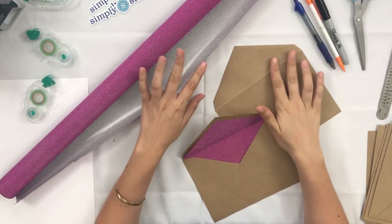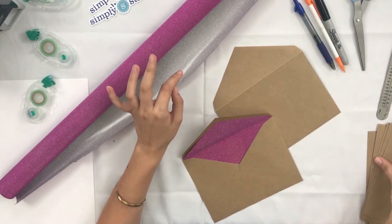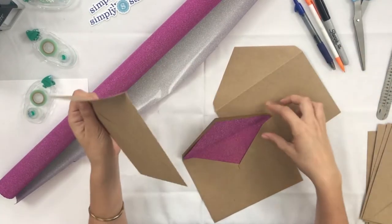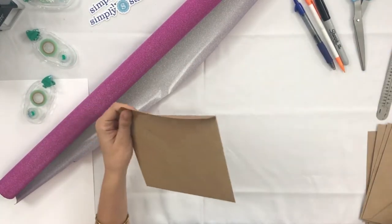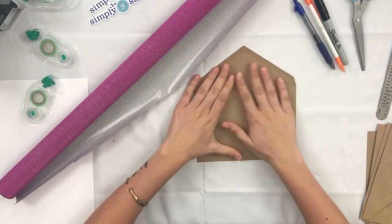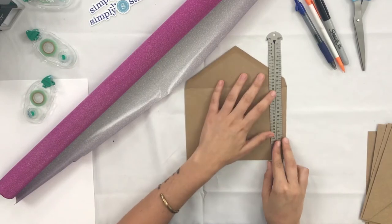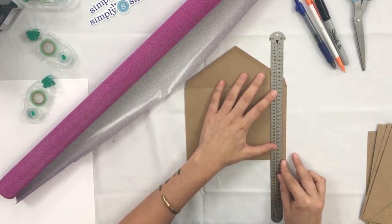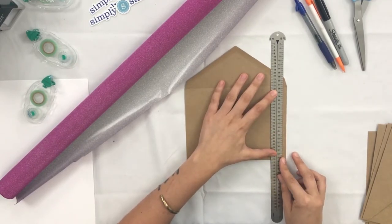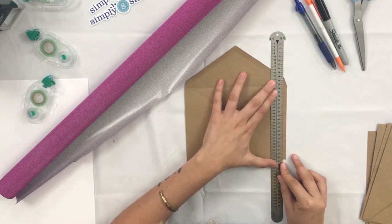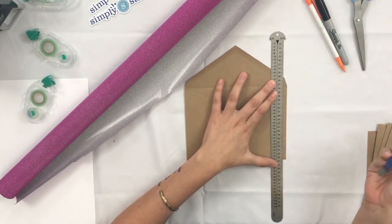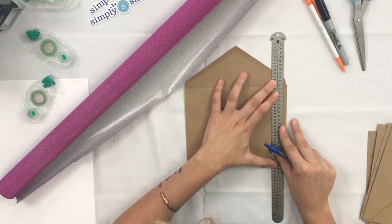So the first thing we're going to do is create a liner template. To create the liner template you're going to take a plain envelope and this is going to be the one that you are going to destroy if you will, because it's going to make creating all of your liners a lot easier.